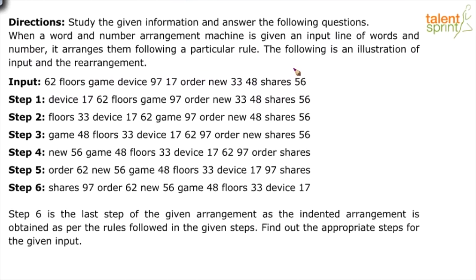So it is an input of 12 elements — six words and six numbers. There is a step-by-step process from step one to step six, where step six is the last step of the given arrangement. The desired arrangement is obtained in the last step. Based on this illustration, we have to find the appropriate steps for a given input.